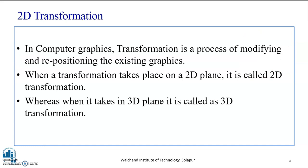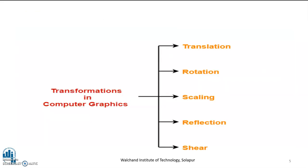We know that in computer graphics, transformation is a process of modifying and repositioning the existing graphic. When a transformation takes place on a 2D plane, it is called two-dimensional transformation, whereas when it takes place in a three-dimensional plane, it is called 3D transformation. Transformations in computer graphics are broadly classified as translation, rotation, scaling, reflection, and shear.